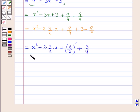Now here the square is completed, so this will be equal to (x - 3/2)² + 3/4.